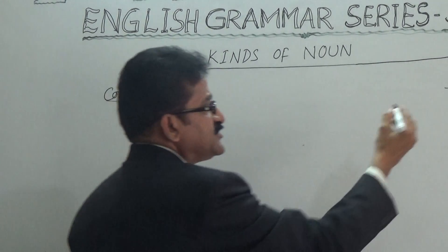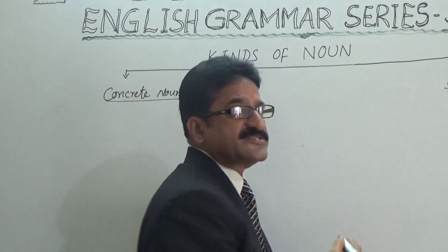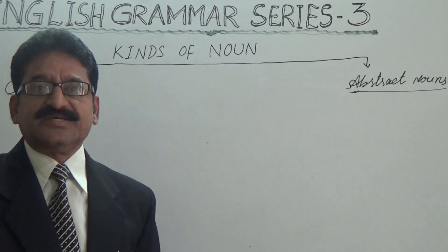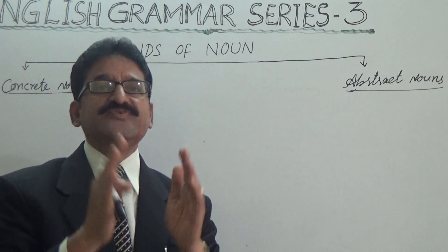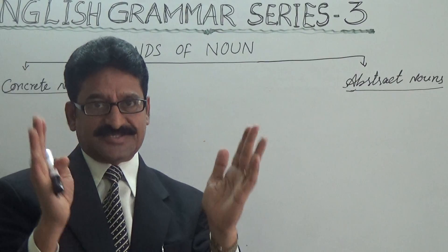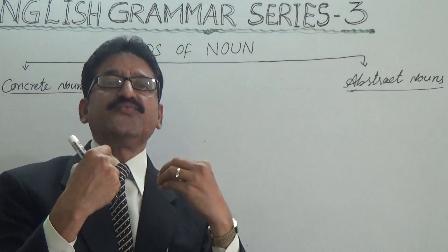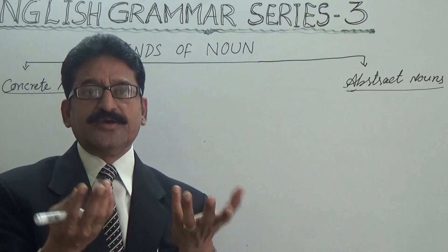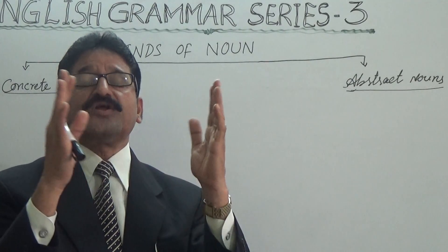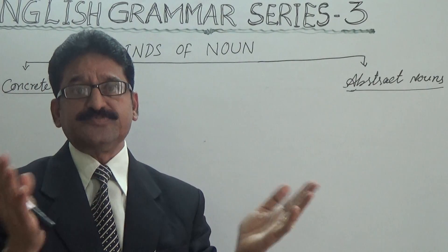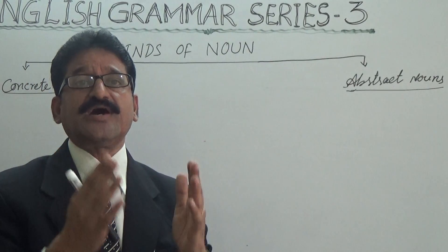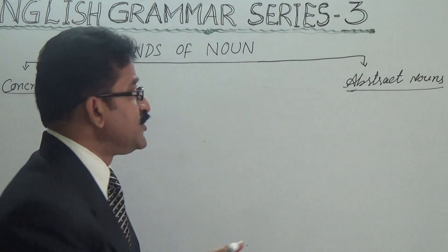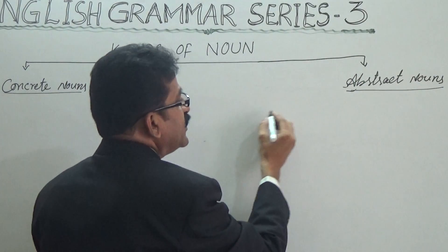Let's take abstract nouns first. Abstract nouns are those which are not physically existing — which we can feel, which we can enjoy, but which we cannot see or touch because they don't have physical features. For example, we have three qualities.